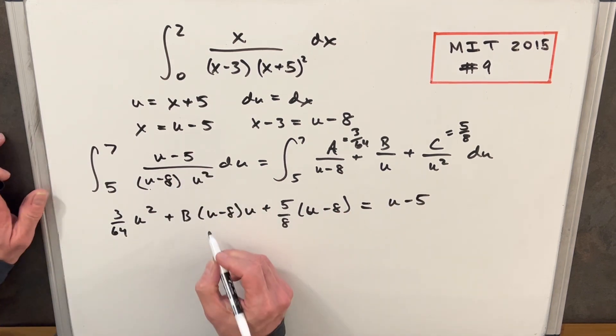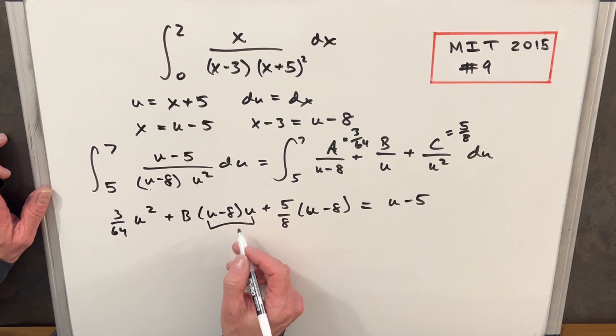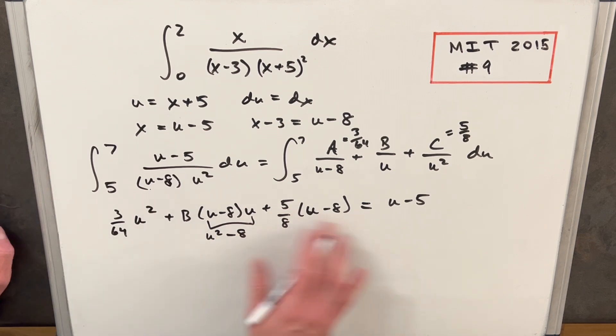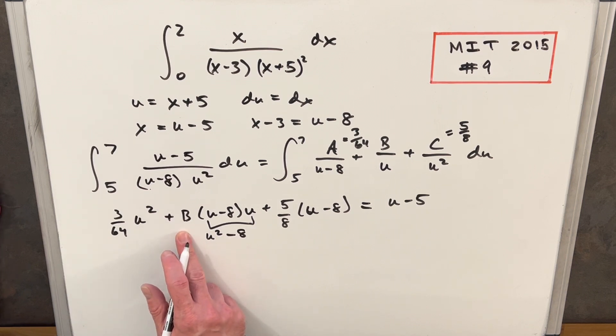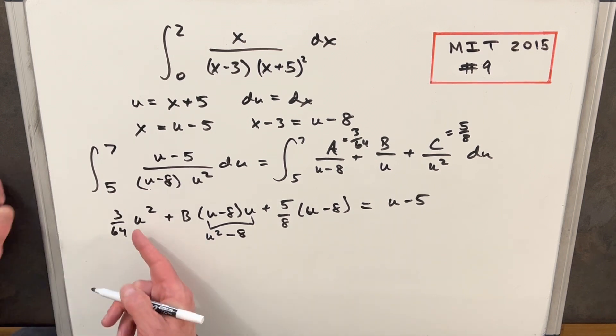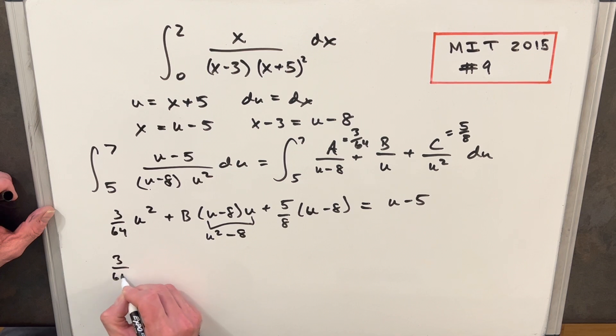But the thing is, now this here, u minus eight times u, this is going to be u squared minus eight. Now, this would be kind of messy, but we really only have to worry about our B. This is the only thing we're doing this for. What I'm going to do is just look at the u squared. So three over 64 u squared. Here, if we multiply B into this, we're going to have plus B times u squared.